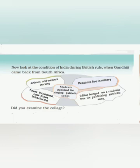Look at the condition of India during British rule when Gandhiji came back from South Africa. Artisans and weavers are starving. Taxes increased. New taxes introduced. Students were punished for singing patriotic songs. Peasants live in misery. An editor was hanged on a roadside tree for publishing a patriotic song. This was the critical condition of India during British rule.